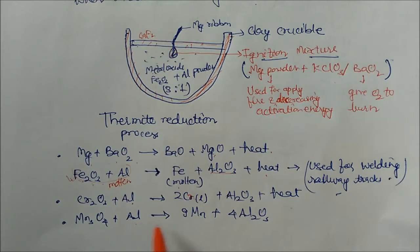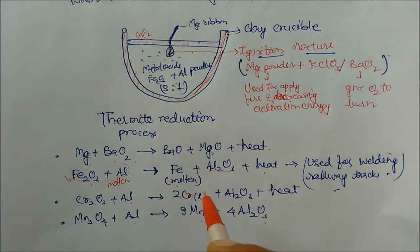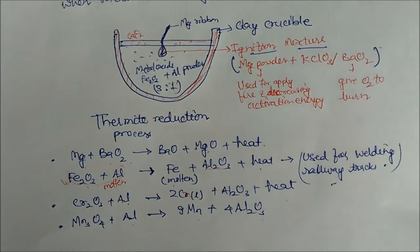So aluminium is a very important metal to reduce the other metallic oxide which is less reactive than metals to get their metal in pure state.